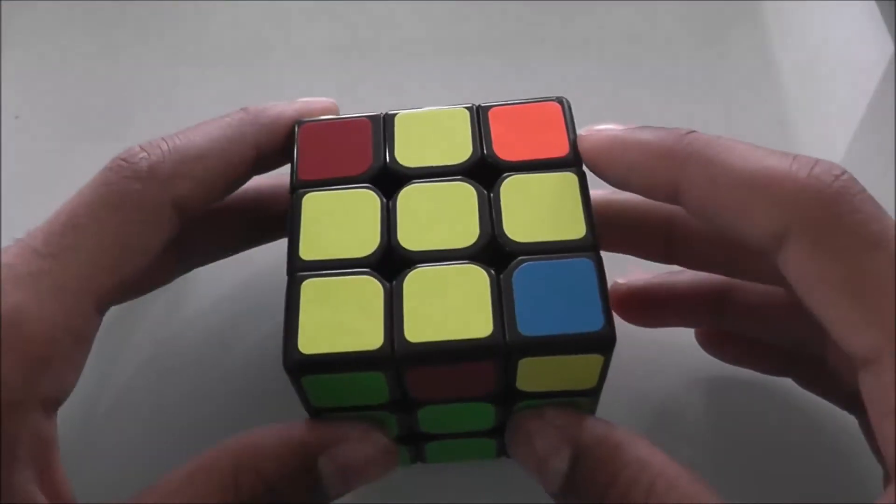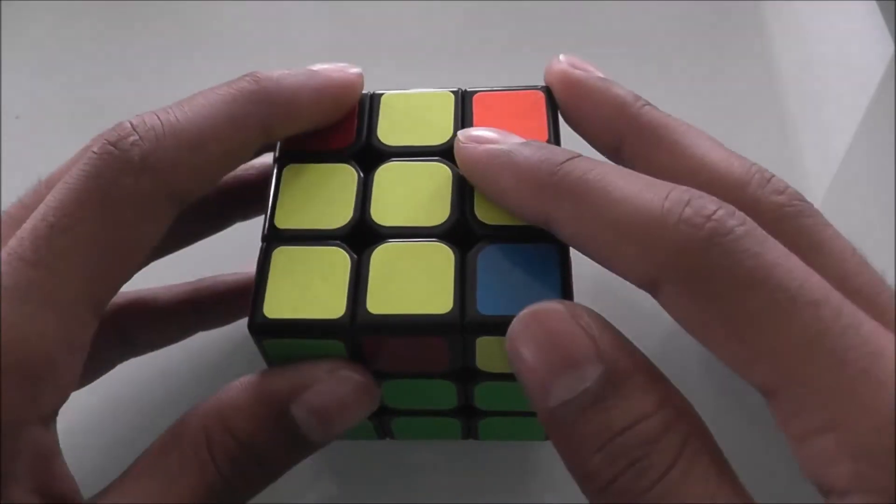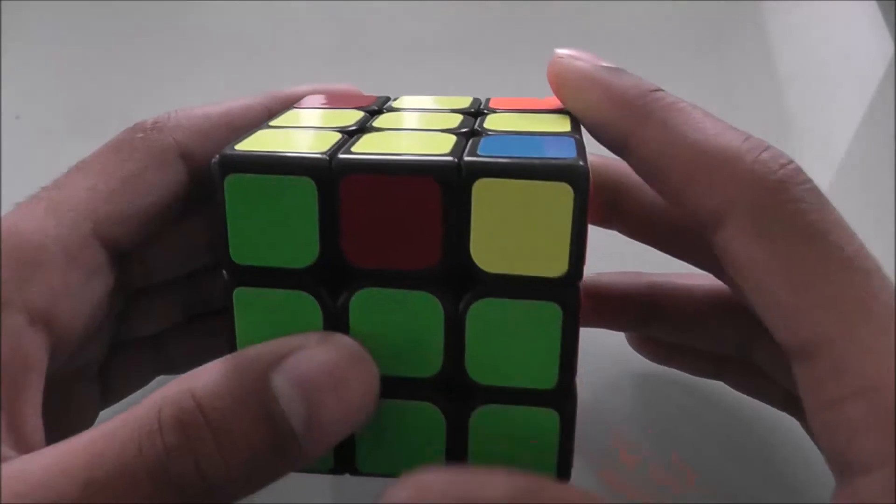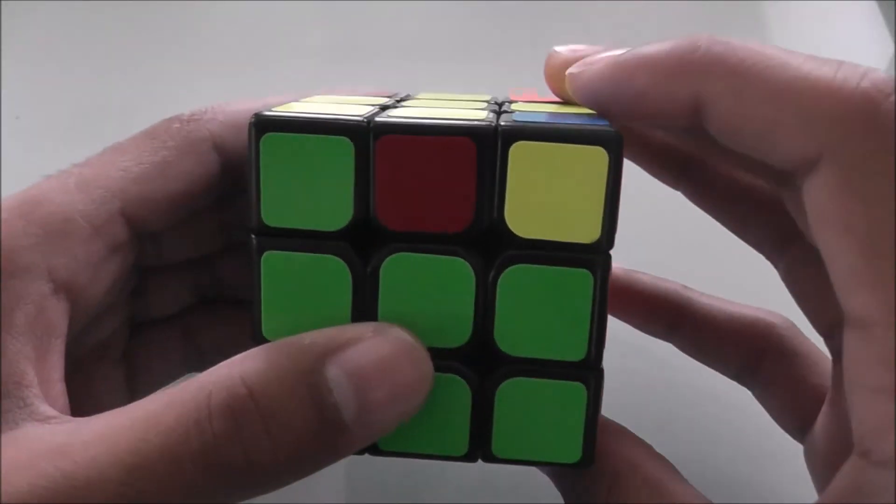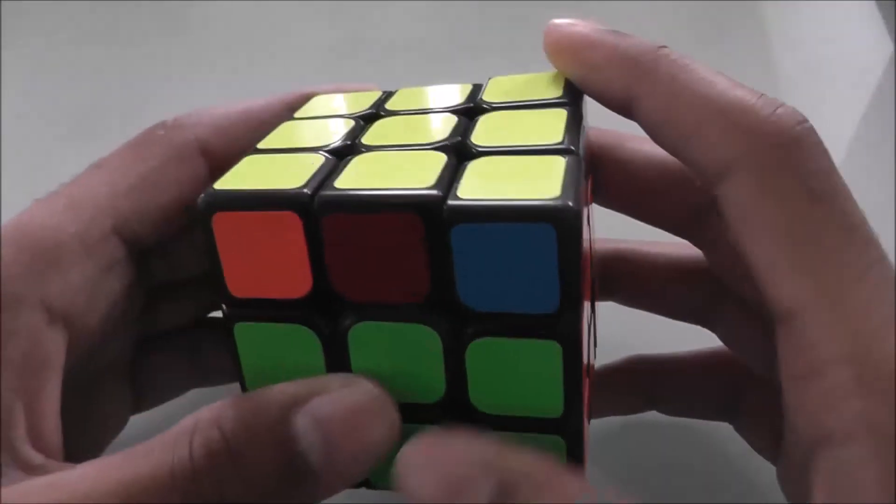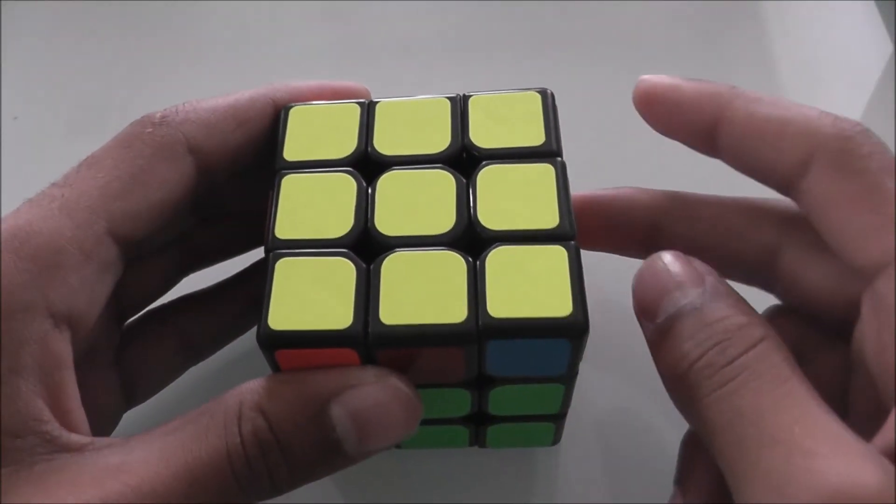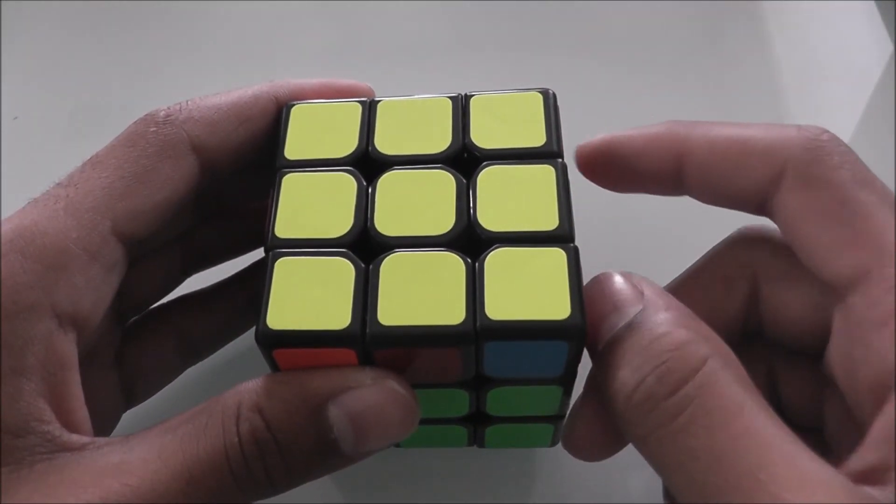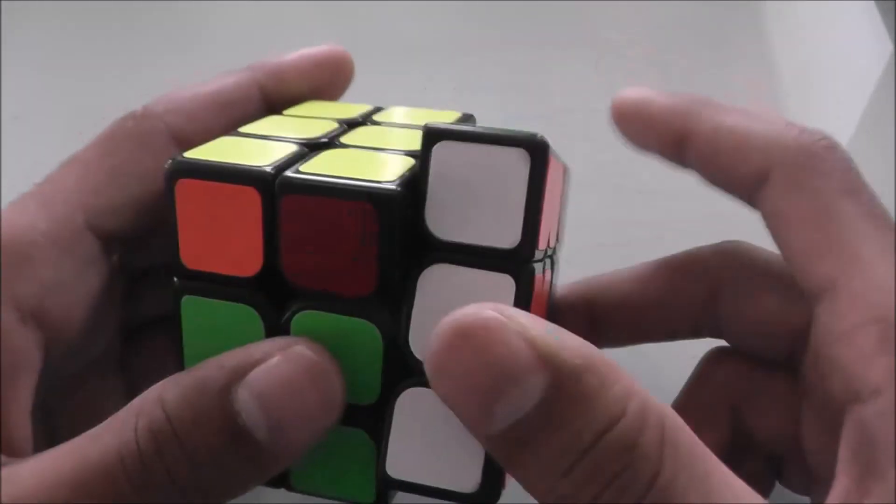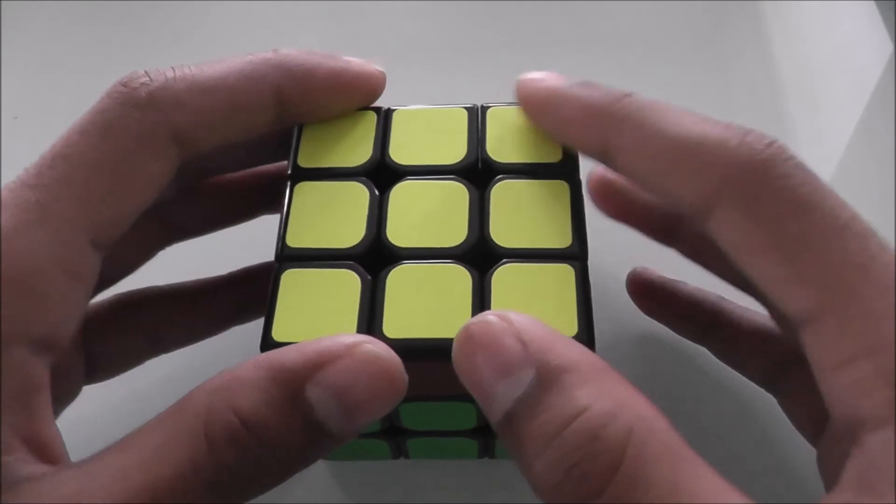Once you get it so that one is solved and three are unsolved, you're going to hold the one that's solved on the left, and you're going to use this algorithm again. You will either have to do that once or twice. If it doesn't work the first time, then do it again so that the solved piece is still right here, and then do it again, and then it should solve your cube.